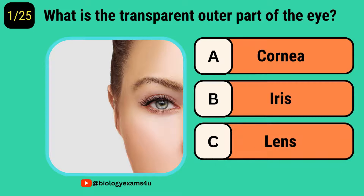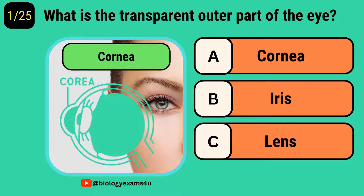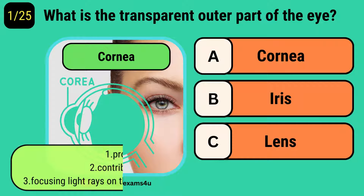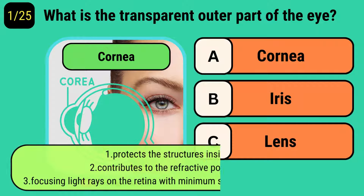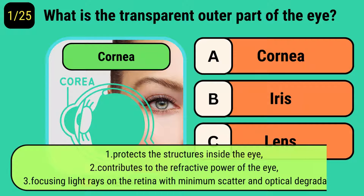What is the transparent outer part of the eye? The answer is cornea. Cornea protects the structures inside the eye. It contributes to the refractive power of the eye and also helps in focusing light rays on the retina with minimum scattering and optical degradation.